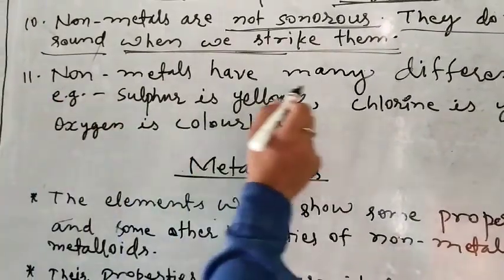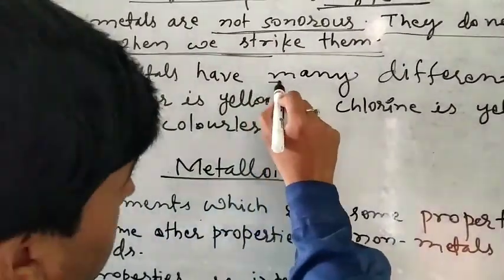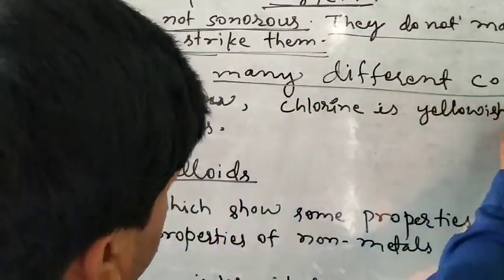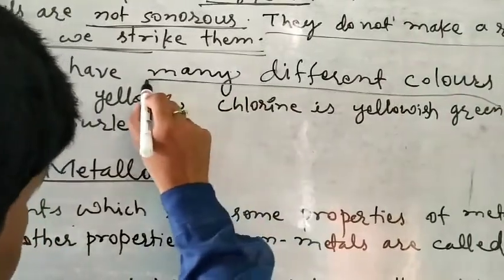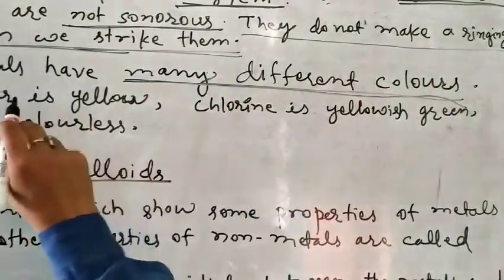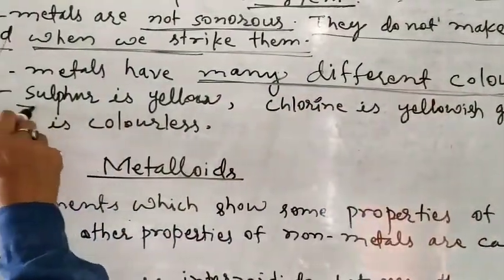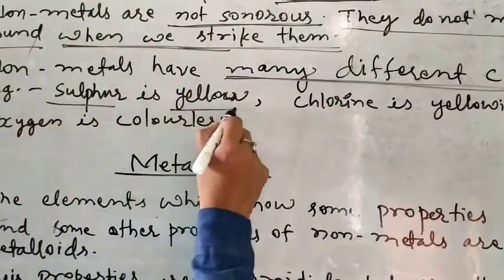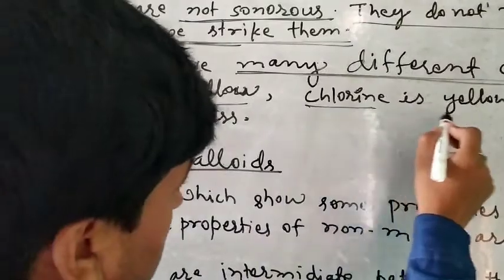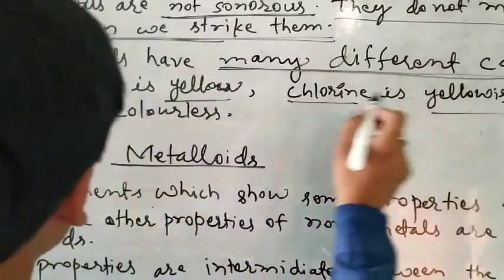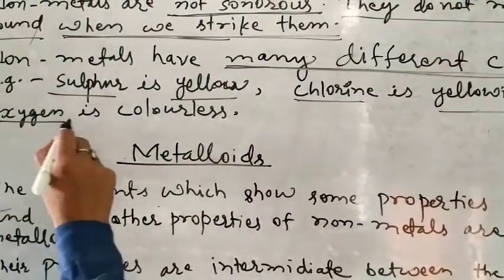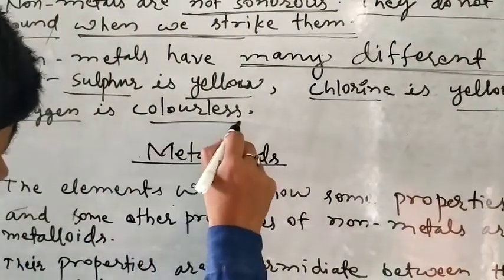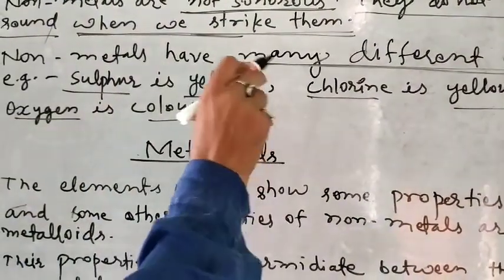Another property is that non-metals have many different colors. For example, sulfur is yellow, chlorine is yellow-green, and oxygen is colorless.